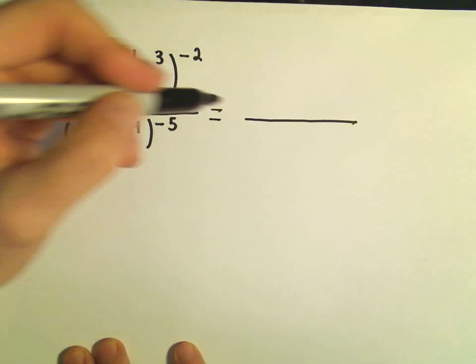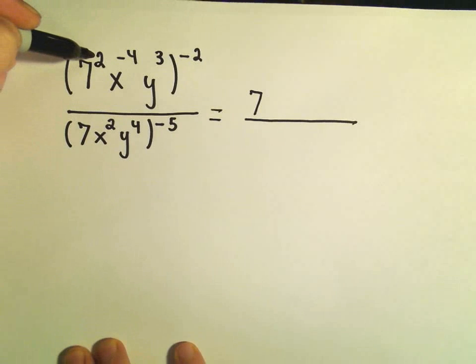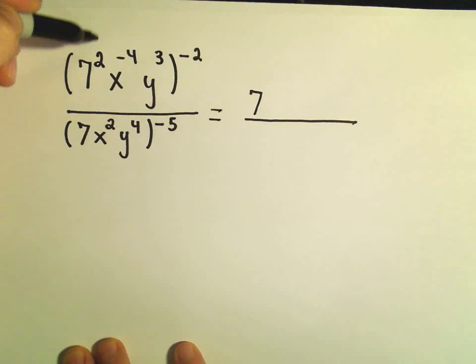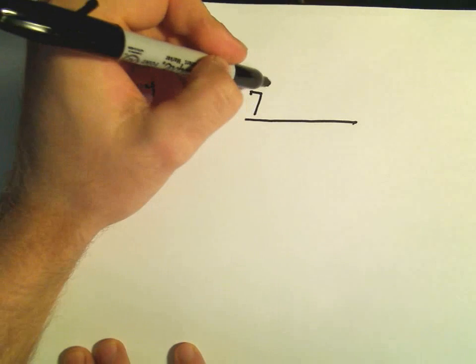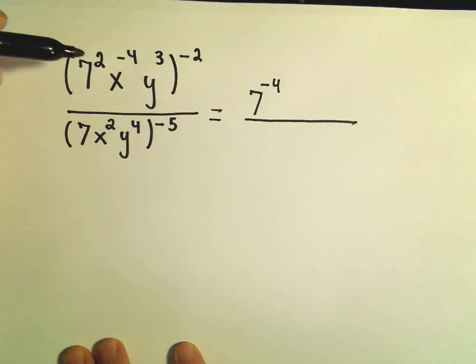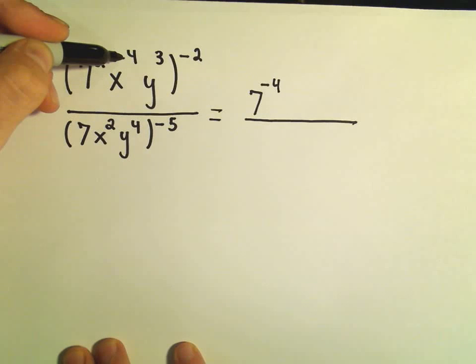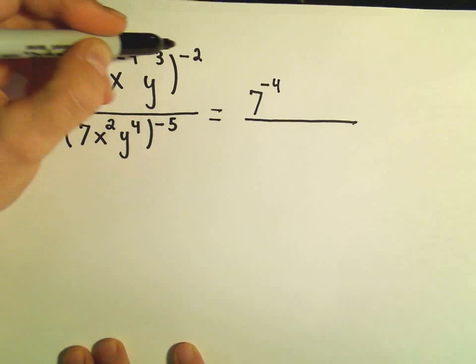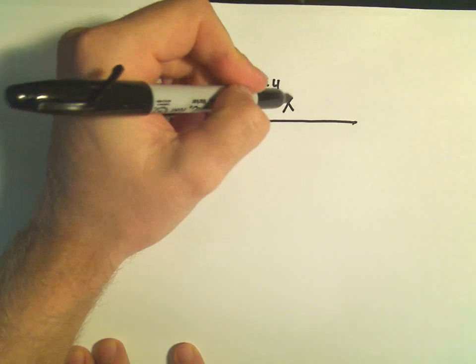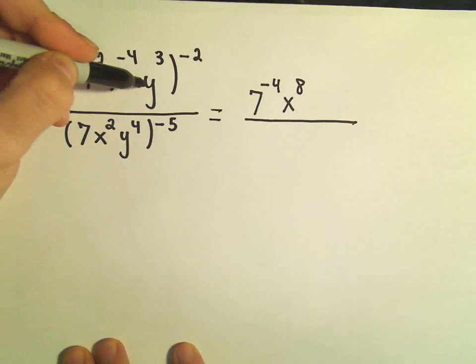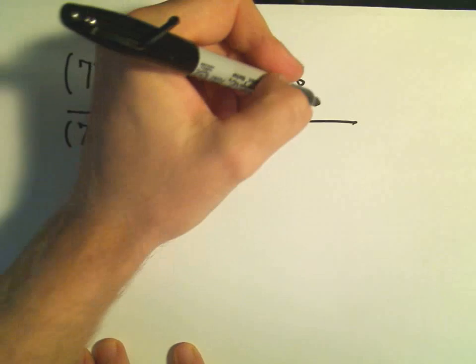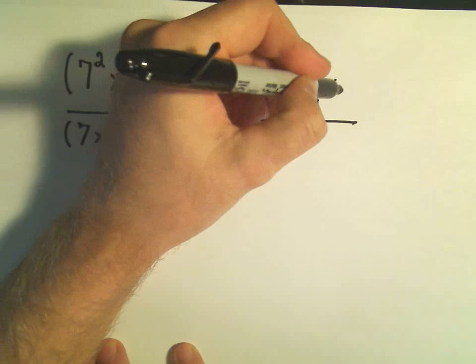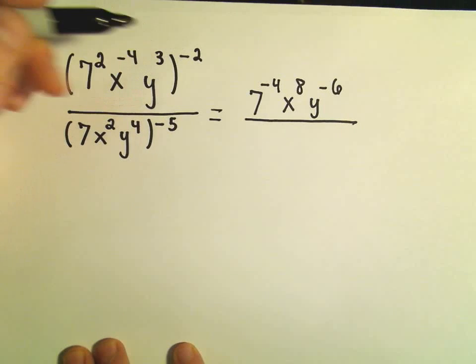Or we could simply use the rules that we've seen before, where if things are in parentheses, you multiply. So my 7, it was originally to the 2nd power, but if I take my 2 times my negative 2, that's going to turn to the negative 4th power. I've got x to the negative 4th, but I'm going to multiply the negative 4 by the negative 2, so that's going to give me x to the positive 8. And then if I multiply on my y, I'll get y to the negative 6th power, so 3 times negative 2.